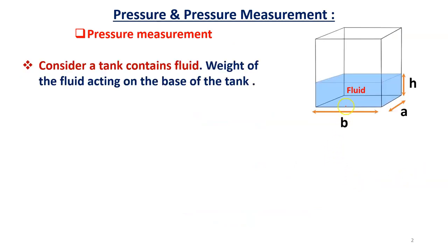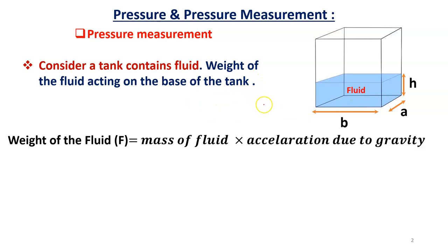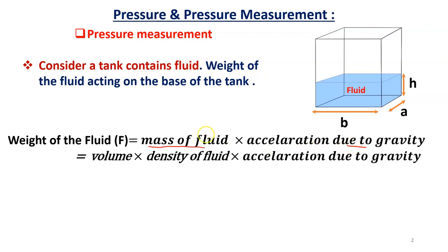Consider a tank containing some fluid. The tank base has dimensions B and A, and the height of the fluid is h. The weight of the fluid acts on the base of the tank. Weight of the fluid equals mass of the fluid multiplied by acceleration due to gravity, g.